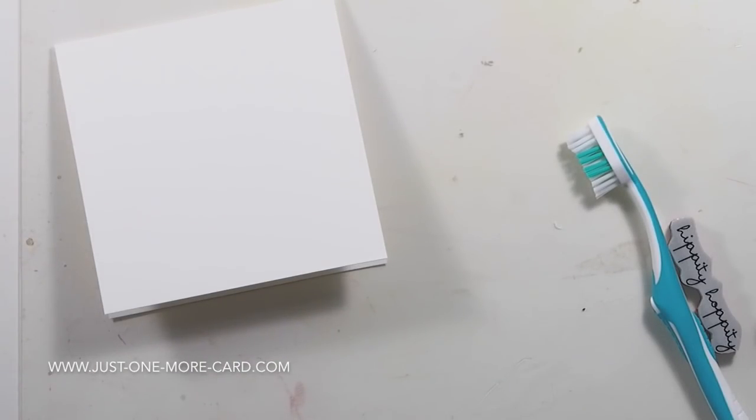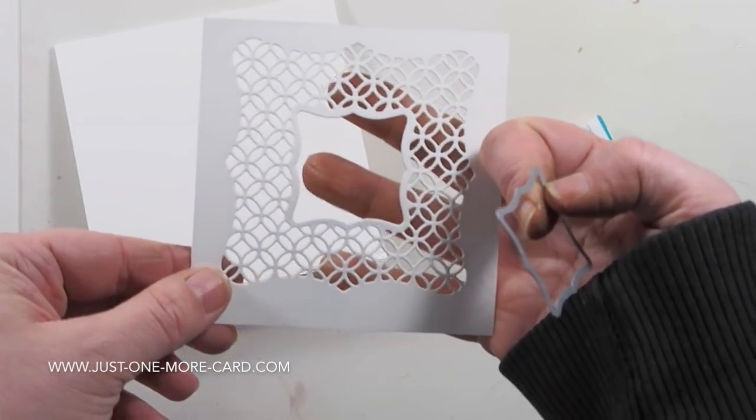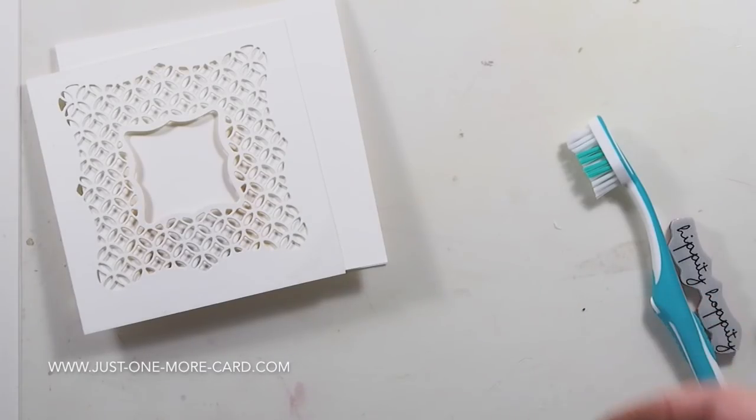So if you have a toothbrush lying around, might be useful. So I used this other die to cut from the inside here—this is one die set from Tonic Studios. They sent it to me a while ago and I didn't get around to use it, but I finally wanted to try it.